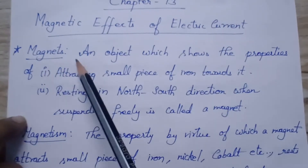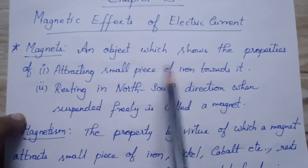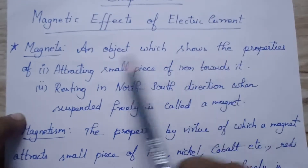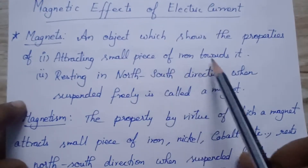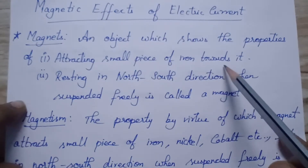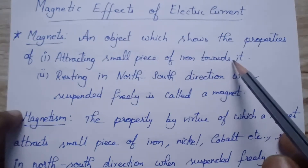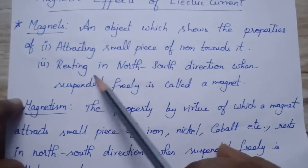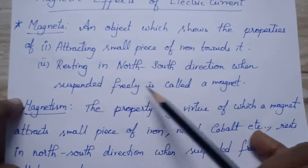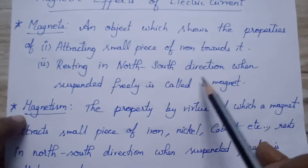What is meant by a magnet? An object which shows the properties of attracting small pieces of iron towards us. Usually we know about only iron, but it can also attract nickel, cobalt, and some other things. And always when it is suspended freely, it will rest in the north-south direction. This is called a magnet.